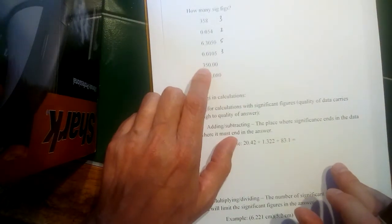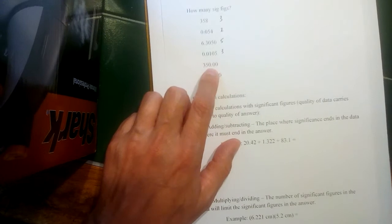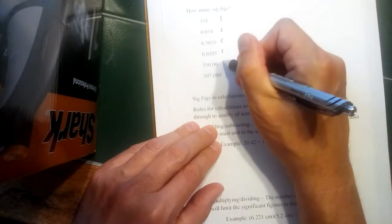350.00, all of those zeros are to the right in a number with a decimal, so they all would count. That would be five.